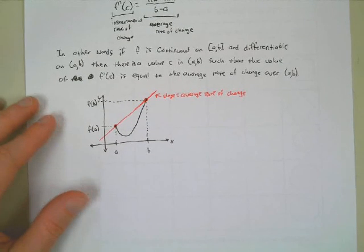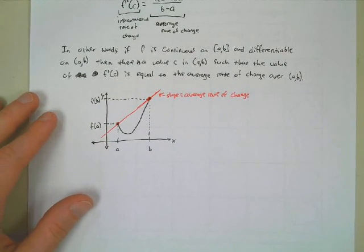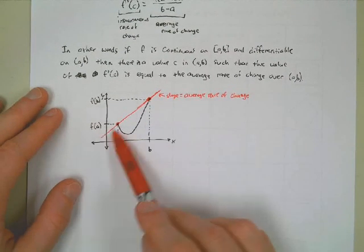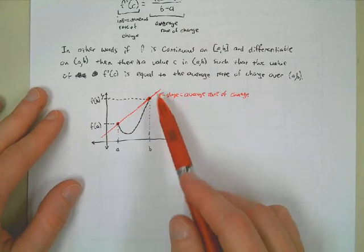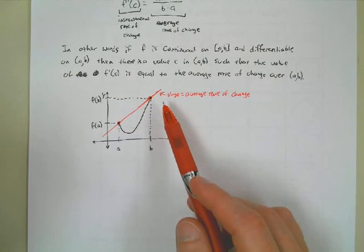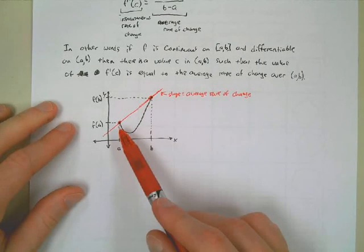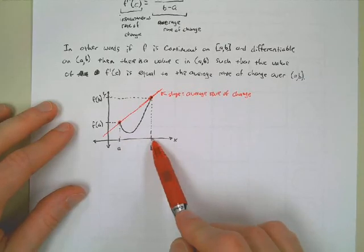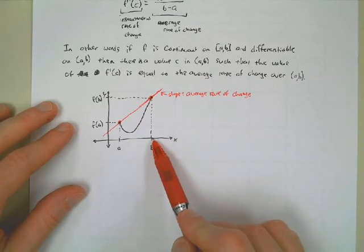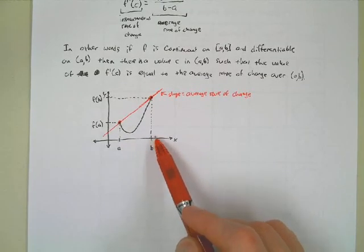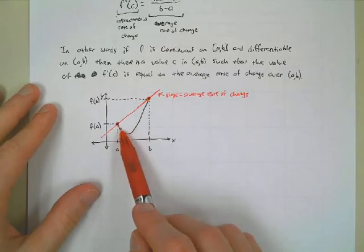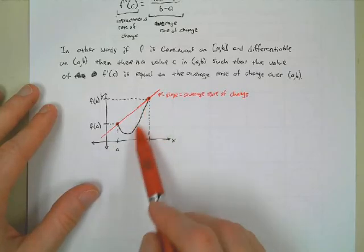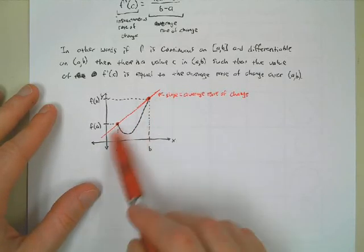The mean value theorem says that this slope — the average rate of change — must be matched somewhere between A and B at an instant. So at some tangent slope between A and B on this function, some tangent slope must match this average rate of change.